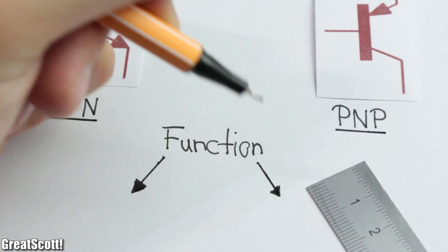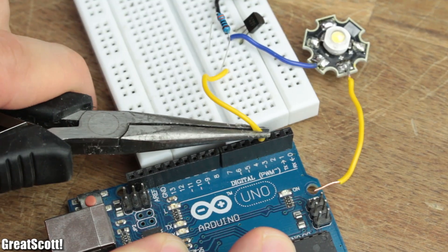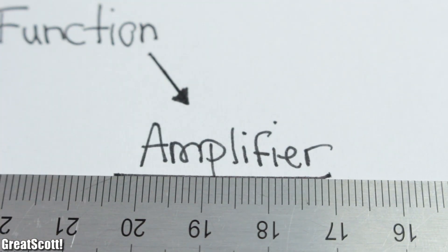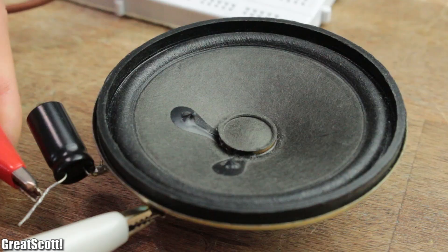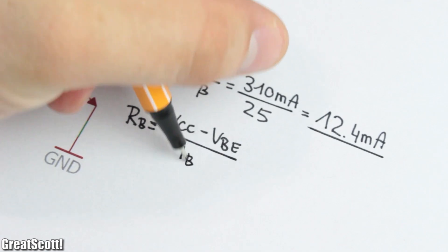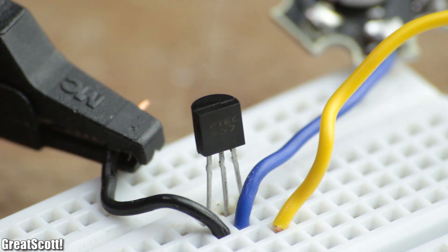In general, those can be used to either act as an electronic switch to, for example, turn your high-powered LED on and off through your Arduino, or to amplify an analog signal to, for example, drive a loudspeaker. So in this video, I will show you the basics on how to use such a BJT as a switch in your circuits without releasing the magic smoke. Let's get started.